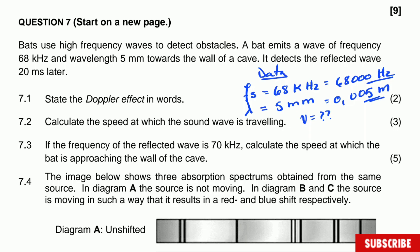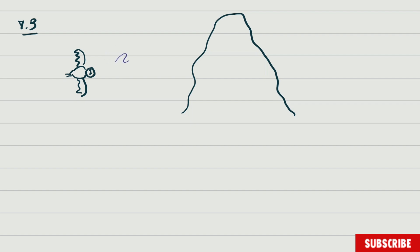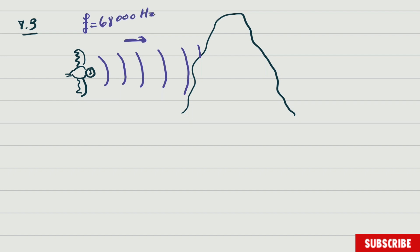Question 7.3: If the frequency of the reflected wave is 70 kHz, calculate the speed at which the bat is approaching the wall of the cave. The bat produces a wave moving towards the wall. Those waves bounce off the wall. The wave the bat produces has a frequency of 68,000 Hz — that is the frequency of the source.